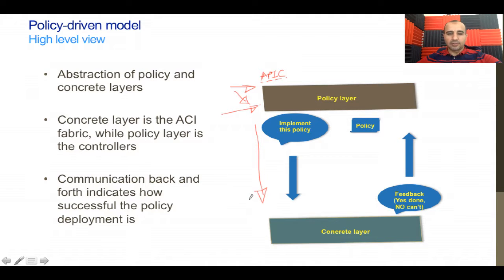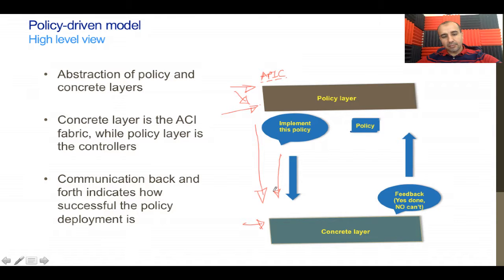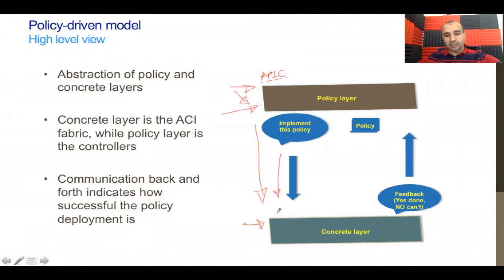The APIC pushes the policy to devices — switches, routers, firewalls, whatever the devices are. That layer is called the concrete layer or the hardware layer. For this communication to work, there has to be a common communication language or protocol between them, and the policy is pushed in a specific format agreed upon by that protocol.